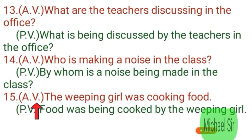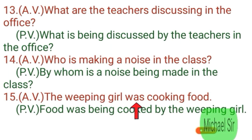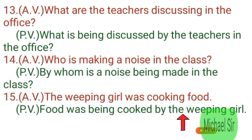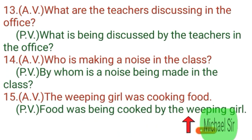Fifteenth example. Active voice: 'The weeping girl was cooking food.' This sentence is in past continuous tense. 'The weeping girl' is subject and 'food' is object. When we make passive voice, 'food' becomes subject. According to subject, we write the helping verb 'was,' then 'being,' then the third form 'cooked,' then 'by the weeping girl.' Passive: 'Food was being cooked by the weeping girl.'